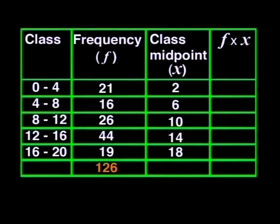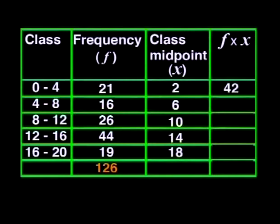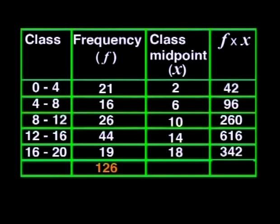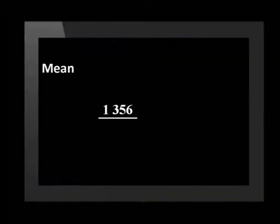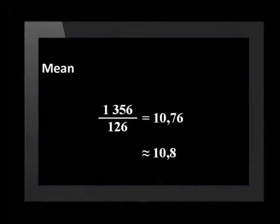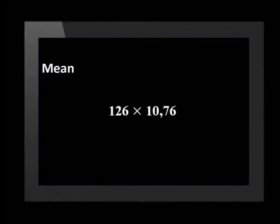So this is what our table looks like. Gerard, I'll let you do the calculations. 21 times 2 is 42. The next is 96, then 260, 616, and 342. Adding all those together gives us 1,356. So the mean average age of the children is 1,356 divided by 126, which is 10.76 years. Let's round it off to 10.8 years. If there were 126 children all aged 10.76 years, the total of their ages would be 1,356.